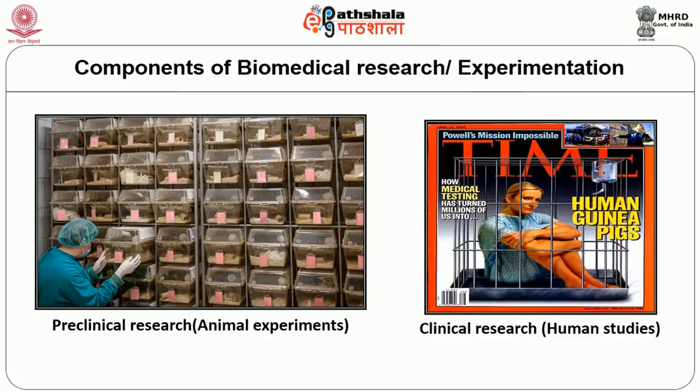When you are asked to do research, if you do basic research — which is called pre-clinical research — we use animals for experiments. Once you complete the animal experiment, we move on to human beings, and whenever we use human beings, we call it clinical research. These are the two components of biomedical experimentation.